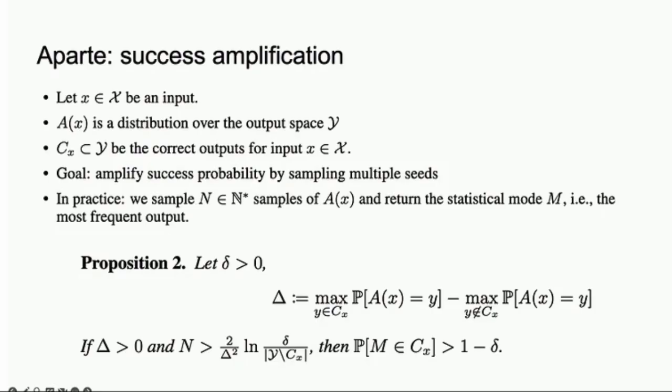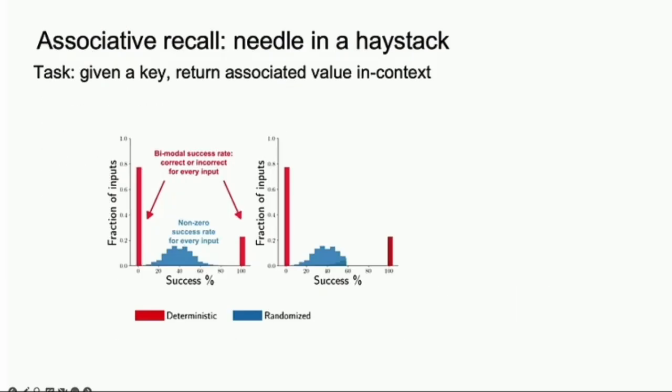We have a theorem that basically tells you: if you're in a situation where your algorithm is able to come up with a mode - the most likely output is a right output - then you can just sample logarithmically enough steps and you will amplify the probability exponentially fast, arbitrarily close to one.